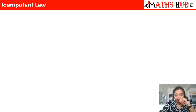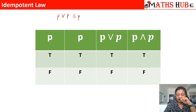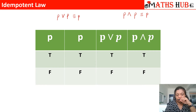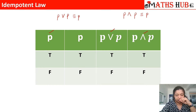Now let us prove these laws with the help of the truth table. For P disjunction P, when P is true, true OR true gives true; false OR false gives false — equivalent to P. Similarly, P conjunction P: true AND true is true, false AND false is false — also equivalent to P. So every law we study can be proved with the help of truth tables.